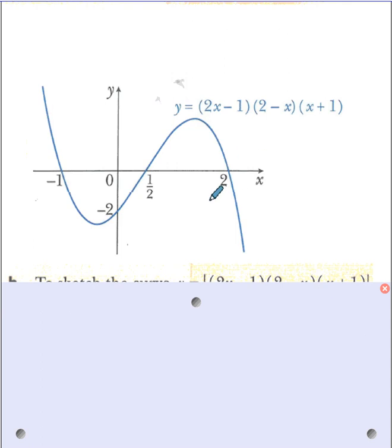This is the graph you have sketched. In the modulus function all the negative values of y, negative values of y mean the part of the curve which is below the x-axis, it will be reflected in the x-axis.